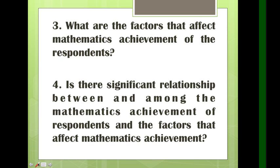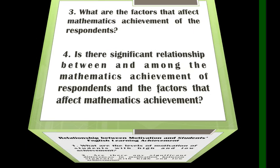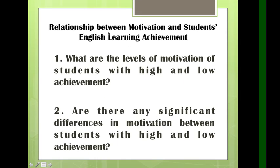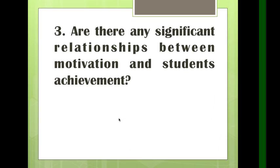The third title is: Relationship between Motivation and Students' English Learning Achievement. From the title itself, it is clear we will use correlation. For question one — what are the levels of motivation — the answer is mean, standard deviation, frequency, count, and percentage. For question two — are there significant differences in motivation between students with high and low achievement — we have two different groups and are looking for significant difference, so this is an independent sample t-test. For question three — is there a significant relationship — from the word 'relationship,' it is correlational.